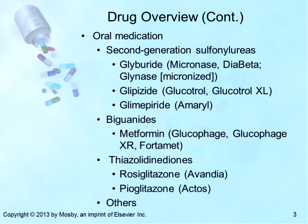The dopamine-2 agonist bromocriptine is a dopamine receptor agonist typically used to treat Parkinson's disease and has recently been approved for use with type 2 diabetes. It works by altering hypothalamic metabolism and increasing insulin sensitivity. This central anti-diabetic agent lowers postprandial glucose levels, hepatic glucose production, triglyceride and fatty acid levels, and A1C by 0.5 to 0.7%. Side effects include dizziness, nausea, fatigue, and rhinitis.